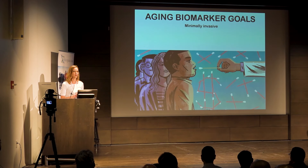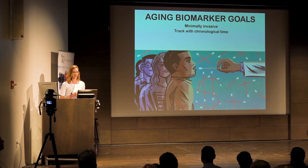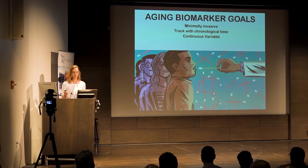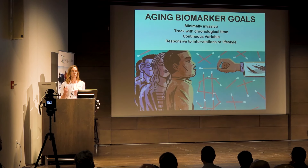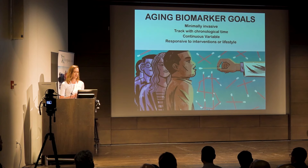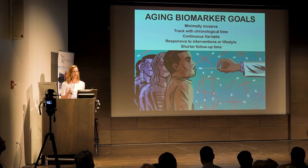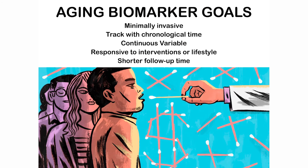I've tried to come up with a list of goals of what might make a good biomarker of aging. Number one, we'd like it to be minimally invasive, otherwise people probably won't be involved in your trial. It should track with chronological time and increase with age. We would like something to be a continuous variable — we know aging is a spectrum. Hopefully it will be responsive to intervention. This is kind of where we are with current biomarkers of aging: we've developed them and can show they track with chronological age, but we haven't had that much evidence yet on whether they're responsive to different interventions. And you should actually be able to monitor them in real time, in short time frames, and see change within a short window.